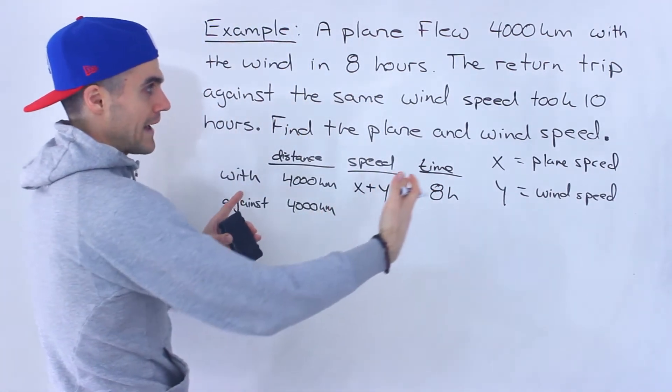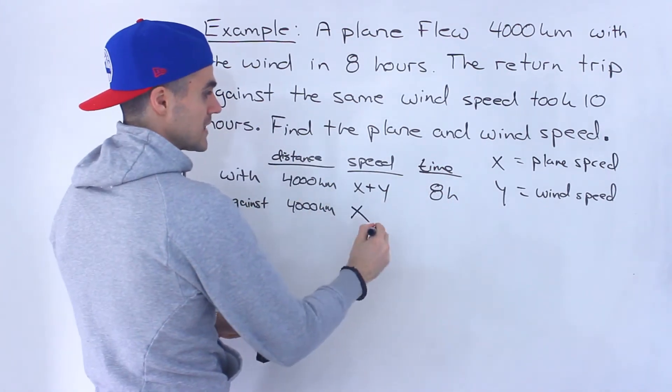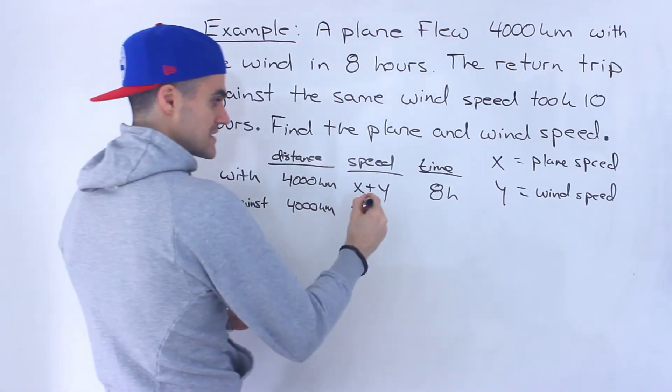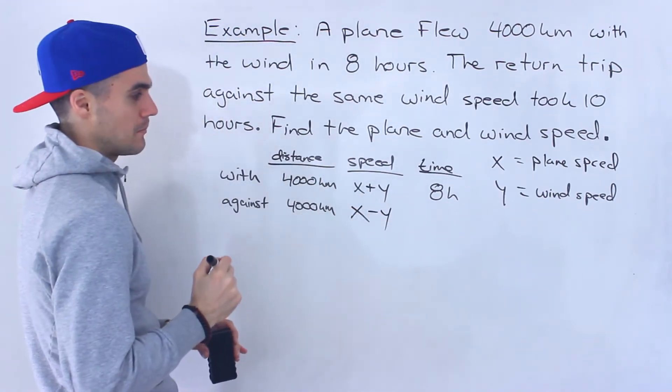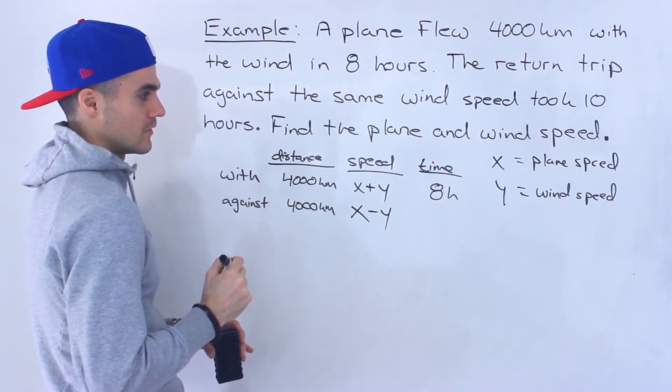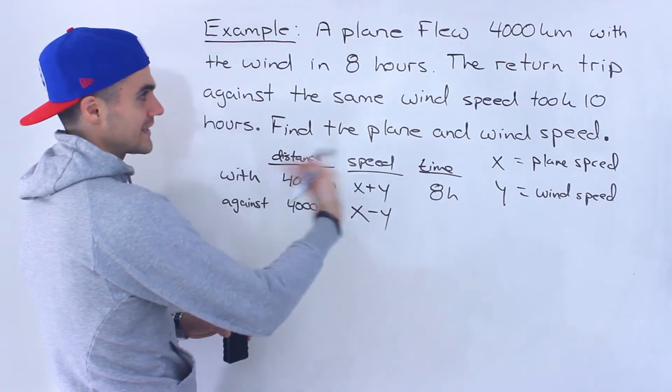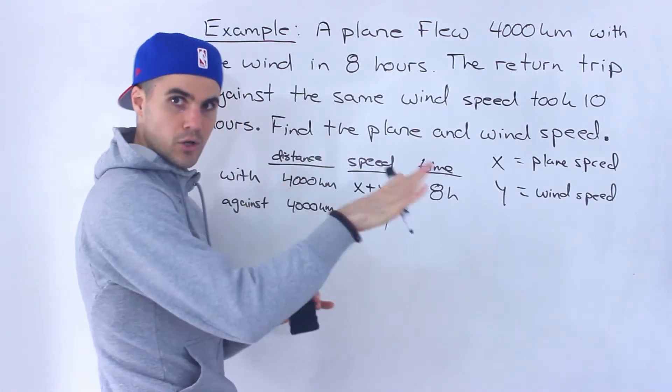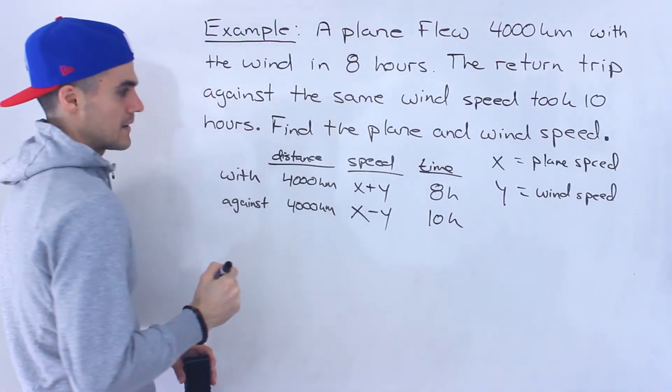Now going back the return trip against the wind we're gonna have the plane speed but now it's going against the wind speed so the wind is actually slowing it down. So it's going to be X minus Y. And then with that speed going against the wind because the plane's going to be going slower it's going to take longer so it's going to be 10 hours.